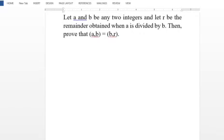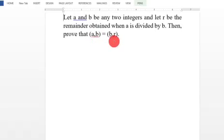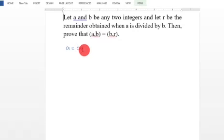Let A and B be any two integers and let R be the remainder obtained when A is divided by B. Then prove that GCD of A, B is equal to GCD of B, R. Since A is divided by B with remainder R, we can write A equal to BQ plus R.